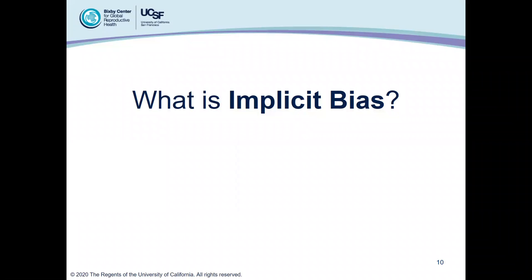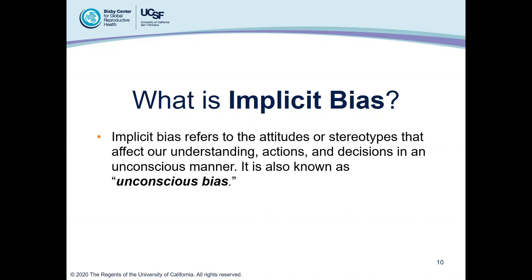Implicit biases refer to the attitudes and stereotypes that affect our understanding, actions, and decisions in an unconscious manner — also known as unconscious bias. The distinguishing quality between explicit and implicit bias is personal awareness. With explicit biases we know we have them, but with implicit biases, we don't actually know that we have them.